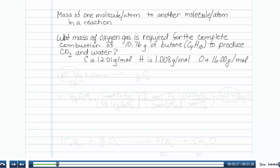Let's figure out what we need to do. We need to start with 10.76 grams of butane, and we want to get to grams of oxygen.